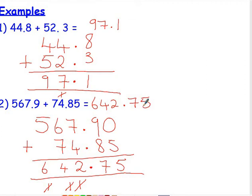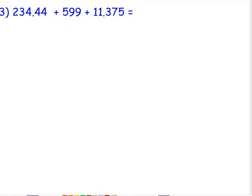Last example then. Okay, if you can copy these into your books exactly as they appear there, just staying in the big books. You can write aside hand example and copy example 1 and 2, and then moving on to example 3. So this time we've got 3 numbers: 234.44 plus 599 plus 11.375.